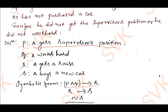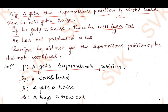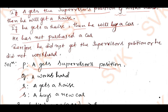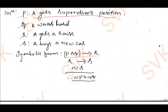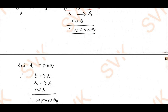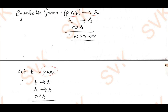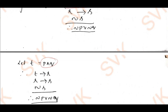The second premise is r implies s. The third premise is negation s. Therefore the conclusion is negation p disjunction negation q. I define t as p conjunction q, so the premises become: t implies r, r implies s, and negation s; therefore negation p disjunction negation q.